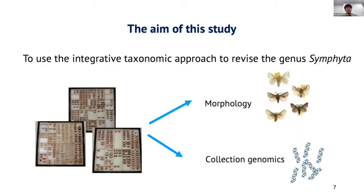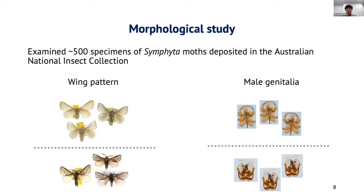The aim of my study is to use an integrative taxonomic approach to revise the genus Simphita. To achieve that, I examined their morphology and also used collection genomics. In the morphological study, I examined about 500 Simphita specimens at ANIC.